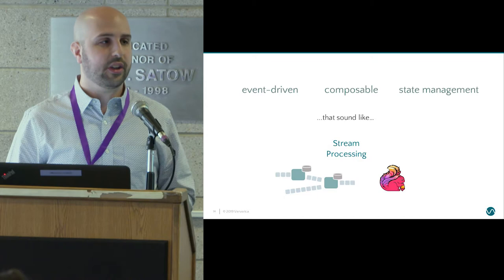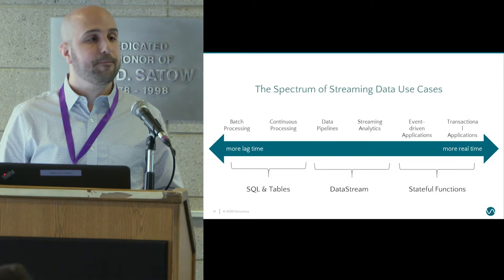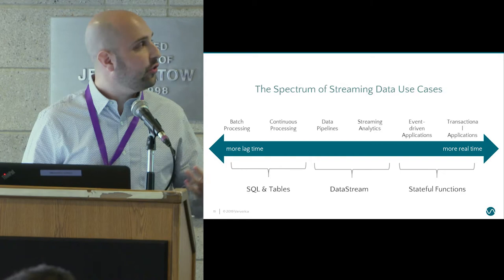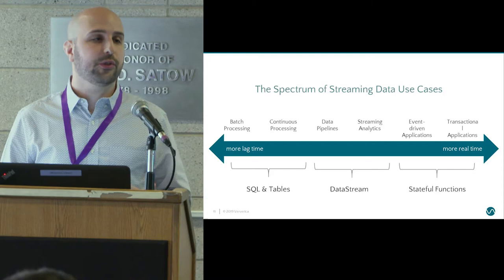But maybe you need a little more low-level control — I want to see each record, store a value in state, set a callback, make an RPC call, and so on. For that, there's the DataStream API, and people have built some really impressive things on top of it. But once we move squarely into this event-driven space and transactional applications, even this can feel a little too restrictive. That's why the Flink community has recently introduced a brand-new first-class API called Stateful Functions.